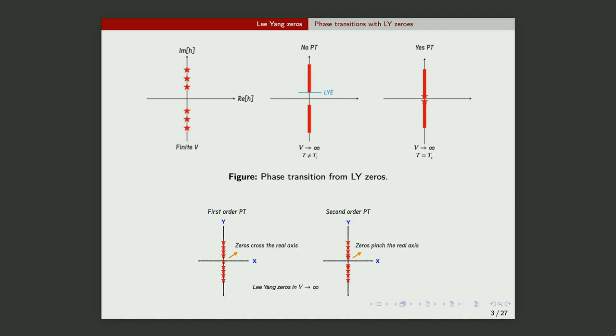Lee-Yang zeros, on top of just telling us about phase transitions, they also tell us about the nature of phase transitions. In the infinite volume limit, if the zeros cross the real axis, then you have a first order transition. If they pinch the real axis, you have a second order, and this is what we are interested in.